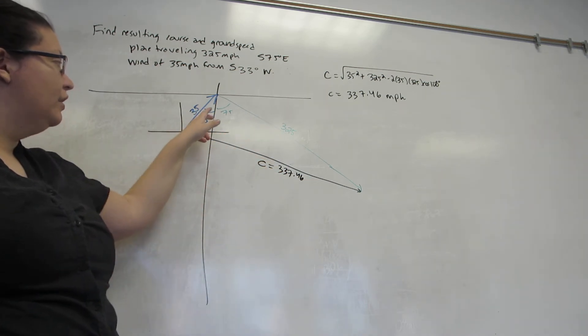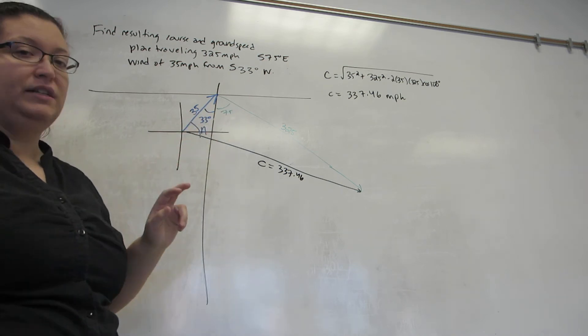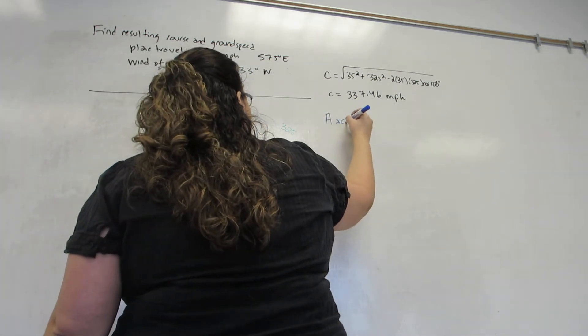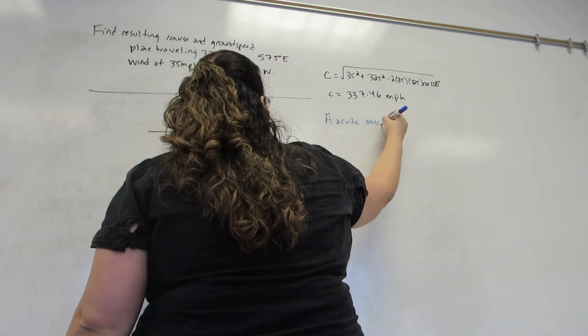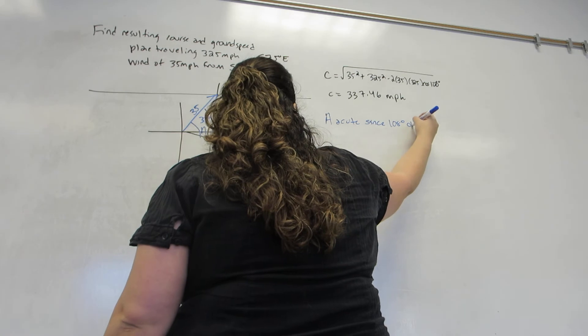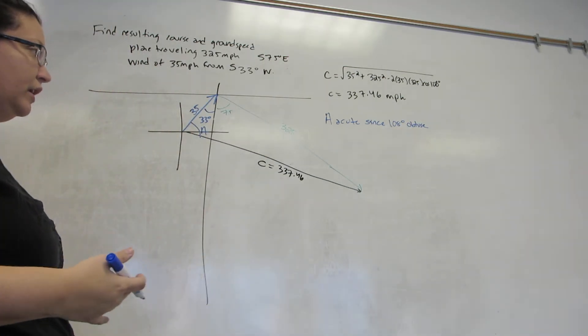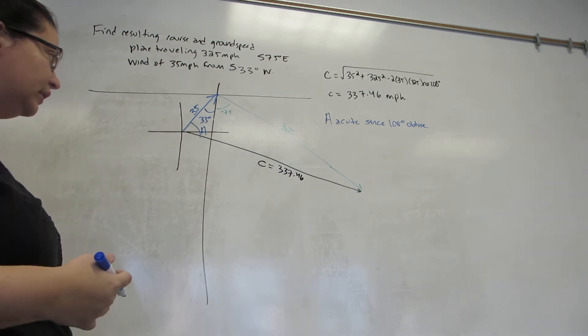Additionally, we already have an angle of 108 degrees here. A triangle cannot have more than one obtuse angle, so we know that A is acute since the 108 degree angle was obtuse. So they must add up to 180. I can't fit another obtuse angle in there.